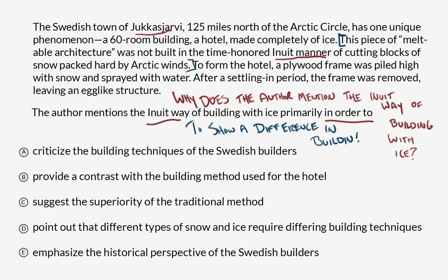I want to look for a choice that corresponds to my working model. So why does the author mention the Inuit way of building with ice? Choice A: to criticize the building techniques of the Swedish builders? I didn't see any negativity in the passage, so I don't think we can really make a case for criticism. Choice B: to provide a contrast with the building method used for the hotel. That's very similar to what I said — to show a difference in building techniques between the Inuit manner and the hotel manner. I'm going to flag this; this might be our answer.